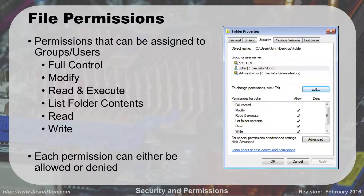File permissions can be assigned to either groups or users. Here's an example: we have the System group, the Administrators group, and John as a user. I clicked on John and I can see the permissions that his desktop folder has — he has modify access, read access, list contents access, and read and write access. That means John has the ability to write it, read it, and because he can modify it, he can also delete it.